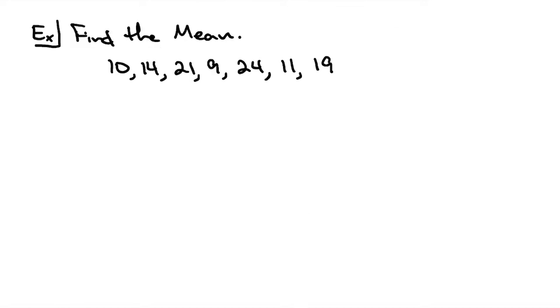Here in our first example we're going to be finding the mean. Let's say that we are given a list of numbers. So to be able to find the mean or the average all you have to do is add up the numbers. So I'm going to add 10 plus 14 plus the 21 plus the 9 plus 24 plus 11 plus 19. And then divide by the number of numbers that are in the list.